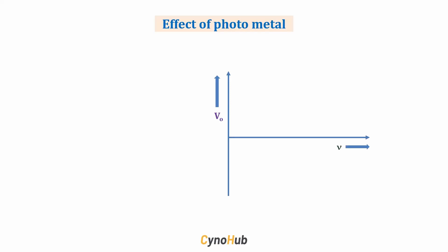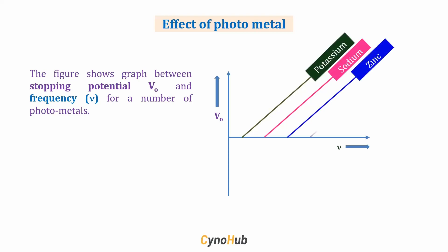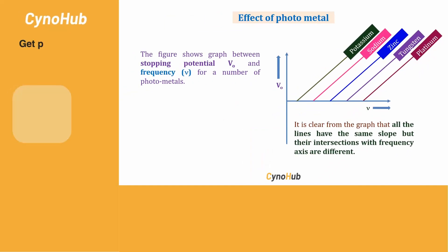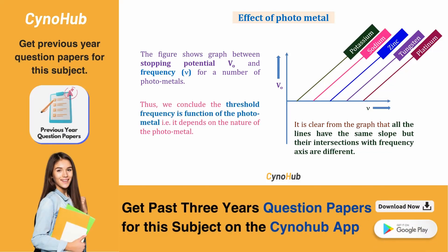The fourth factor is the effect of photo metal. The graph of stopping potential versus frequency gives a straight line, and for different photo metals — such as potassium, sodium, zinc, tungsten, and platinum — these straight lines have the same slope but different intersection points on the frequency axis. This shows the threshold frequency is a function of the photo metal; it depends on the nature of the photo metal.